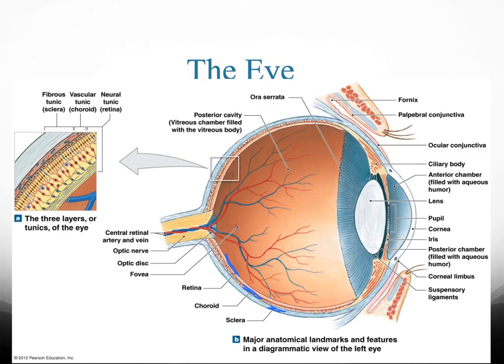Over here in the front we're going to have the cornea, which is a continuation of the sclera. Then we're going to have another structure called the iris. The iris is going to be made up of a muscle that's going to contract and control the amount of light that goes in.